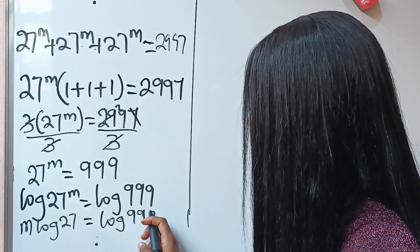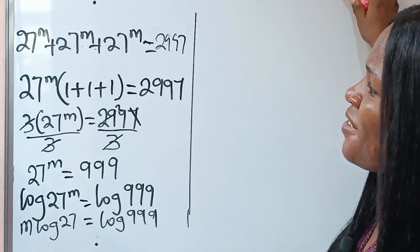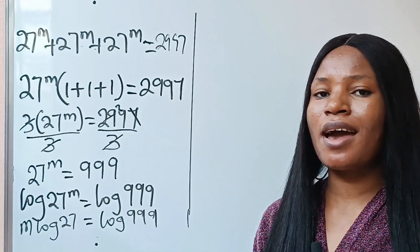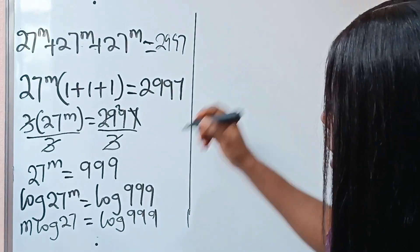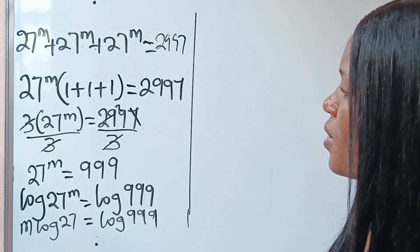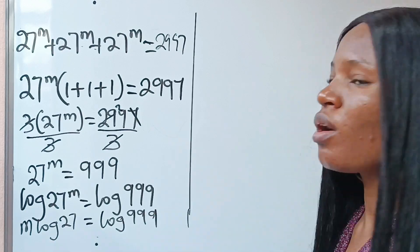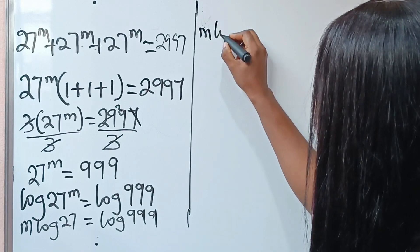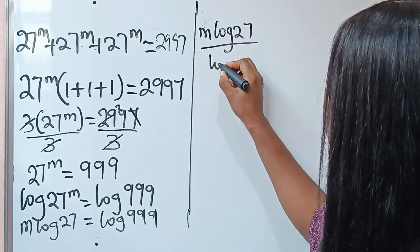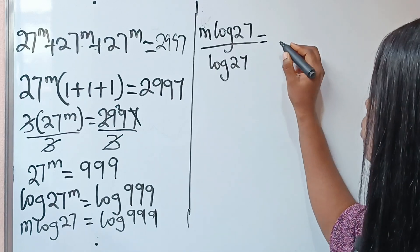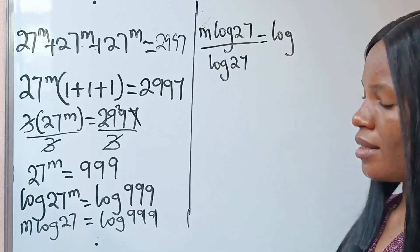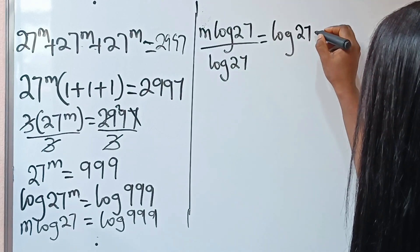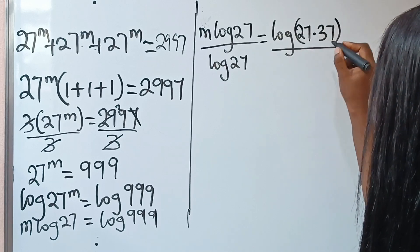Since we are looking for m, let's divide both sides by log 27. We get m equals log 999 divided by log 27. Now let's simplify: 999 equals 27 times 37, so we have log of 27 times 37, divided by log 27.